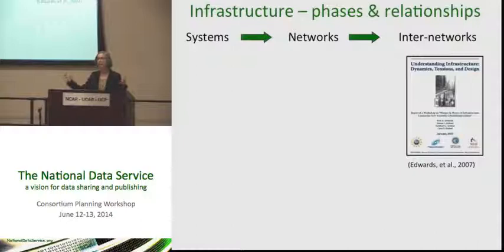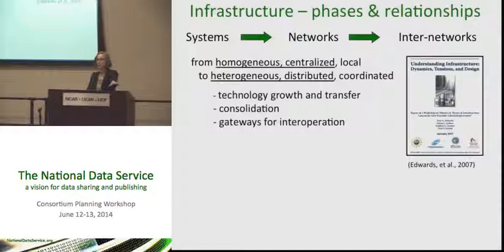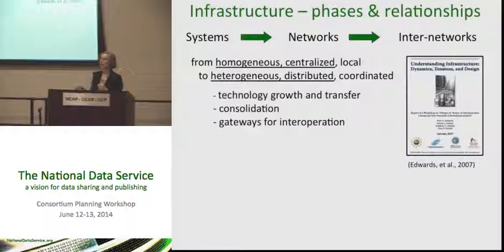One of the basic tenets is that infrastructure grows. It grows first by individual systems that become networked and then those networks become inter-networked. We have homogeneous, centralized, local things happening, and then they become heterogeneous, distributed, coordinated things. This happens through a process of technology growth and transfer, consolidation where things come together in networks, and then gateways for inter-operation.